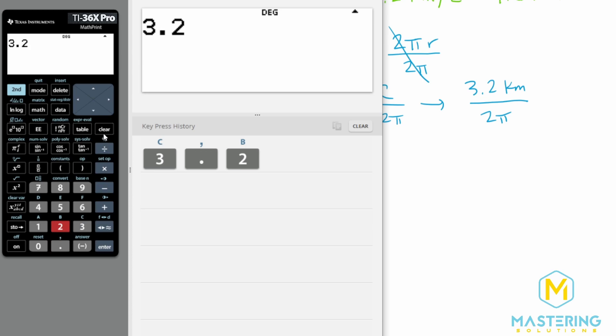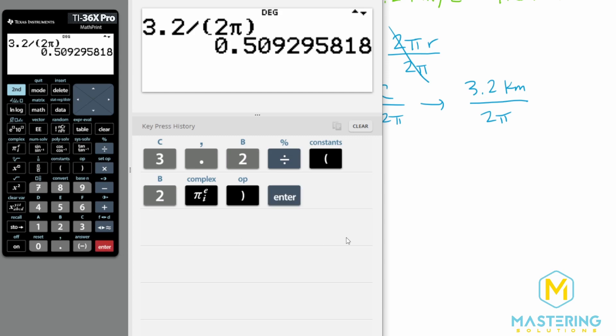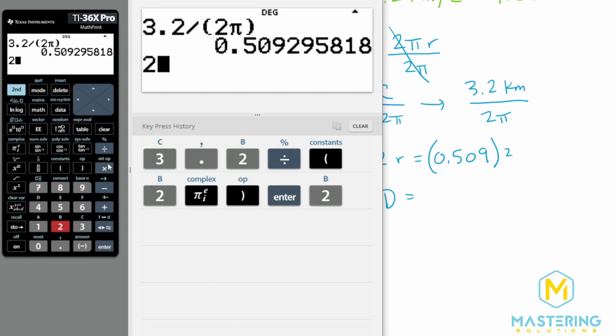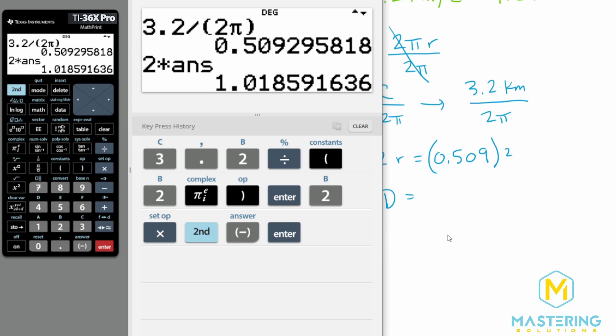This will give us the radius. So 3.2 divided by 2π gives us 0.509. The radius equals 0.509. But that's only half of the circle. So if we multiply it by two, that will give us the diameter. The diameter equals two times the answer we got, which is 1.02 kilometers.